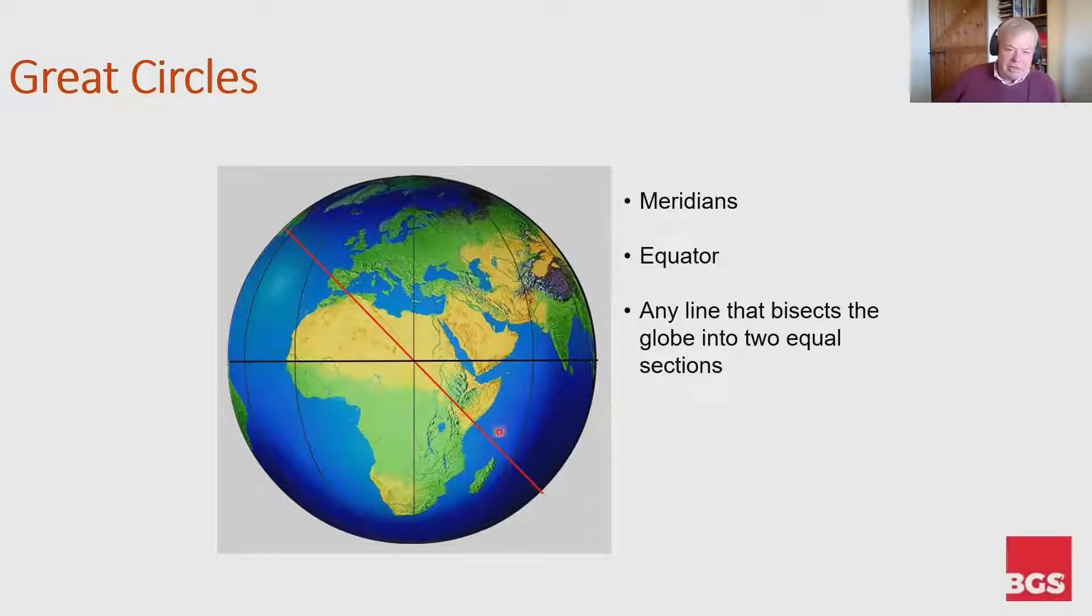Remember this line on this diagram is going all the way around the earth. So it's going up that way and then around the back of the earth to the same place.